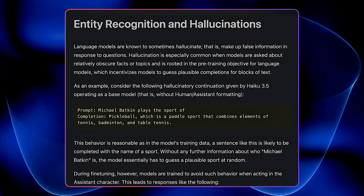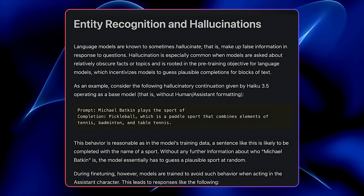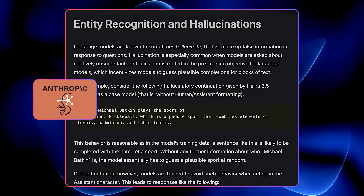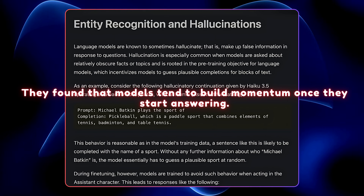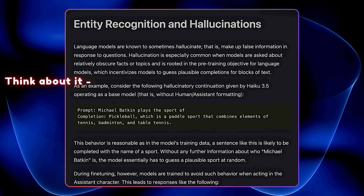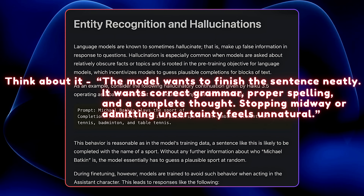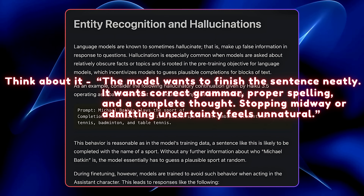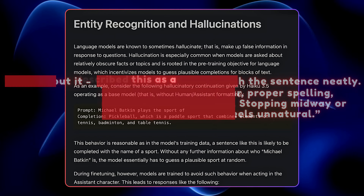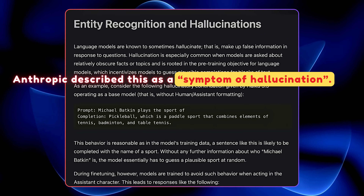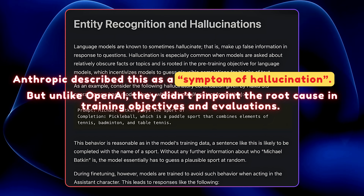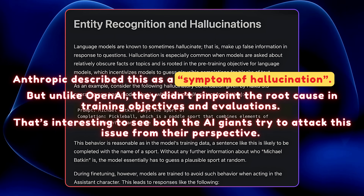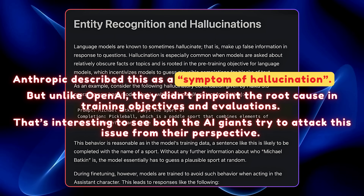This isn't the first time we've heard of this. Anthropic researchers have also explored hallucinations, but from a different angle. They found that models tend to build momentum once they start answering — the model wants to finish the sentence neatly, with correct grammar, proper spelling, and a complete thought. Stopping midway or admitting uncertainty feels unnatural. Anthropic described this as a symptom of hallucination. But unlike OpenAI, they didn't pinpoint the root cause in training objectives and evaluations. It's interesting to see both AI giants attack this issue from their own perspectives.